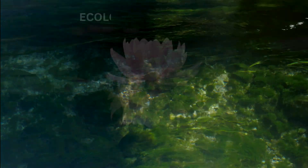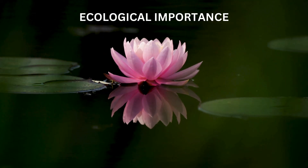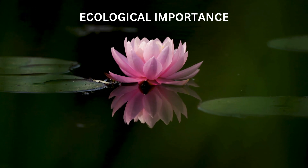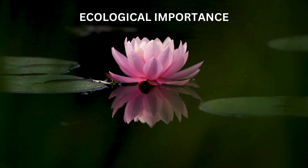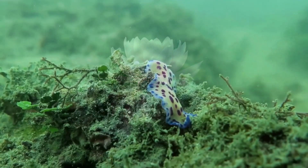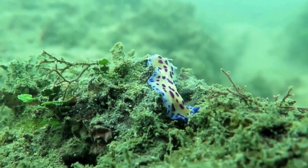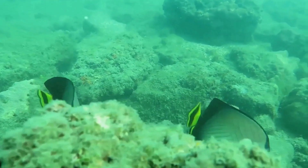Ecological importance: like other algae, Spirogyra plays a crucial role in aquatic ecosystems. They contribute to oxygen production through photosynthesis and serve as a food source for various aquatic organisms.